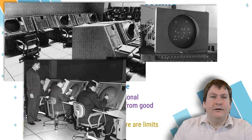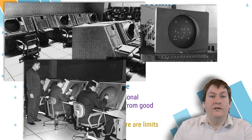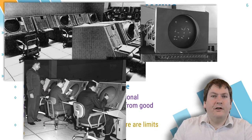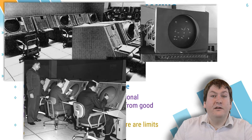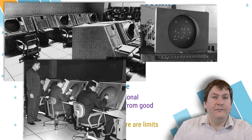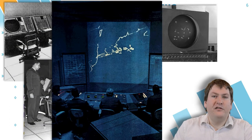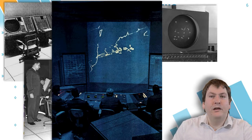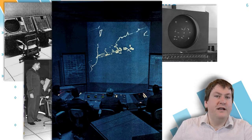SAGE was a computerized air defense system created by the United States to respond to possible airborne threats during the Cold War. It was able to quickly pull together data from multiple radar sites and process it into a single unified image of the airspace over a wide area, such as the whole United States. It was a very early example of computerized information systems to support decision-making, and it's still the largest computer ever built in terms of physical size, taking up 20,000 square feet. SAGE is also where the trope of important military figures sitting around a big table in meetings comes from in movies and TV shows. The movie Dr. Strangelove even used decommissioned displays from SAGE as props.